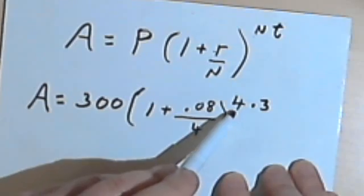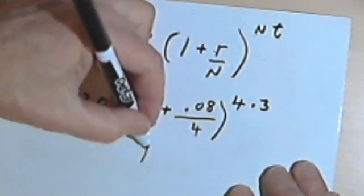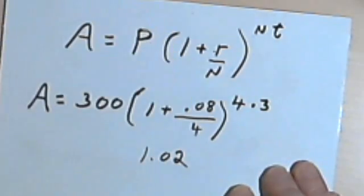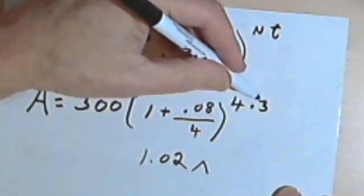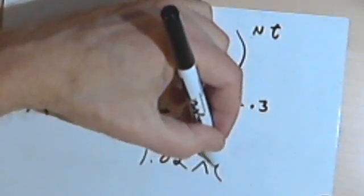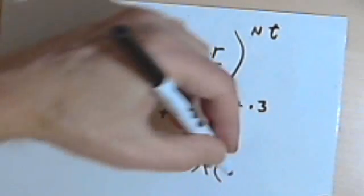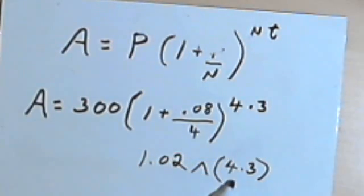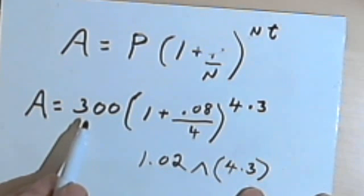Then take that and raise it to the 4 times 3. So whatever you get, in this case we'd have 1.02, that's gonna be in your calculator, you're going to raise that and you can either multiply 4 times 3 in your head, but if you don't want to, use parentheses after that raise to sign, that up arrow, and put in 4 times 3. So the calculator knows that this whole thing is the exponent. And then once you find out what 1.02 raised to the 4 times 3 is, multiply that by 300.